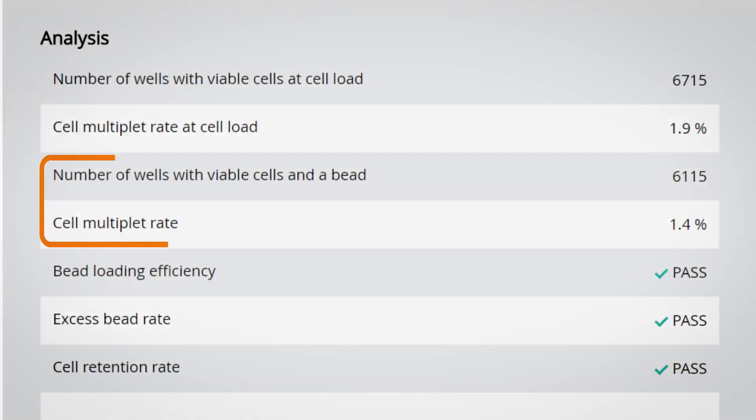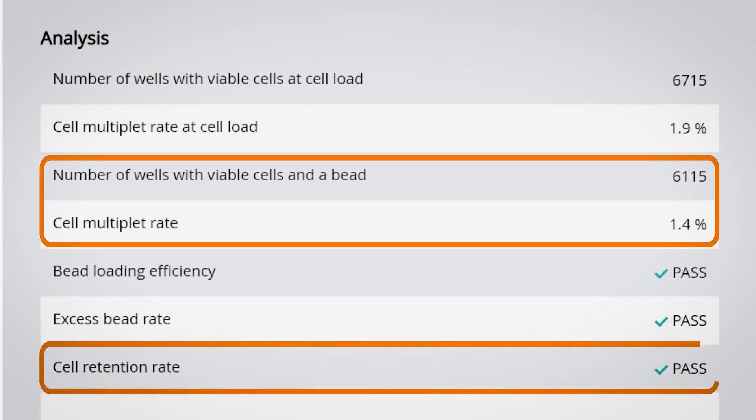In our experiment, we can see that after washing 6,115 cells were left in the cartridge with a multiplet rate of 1.4%. The cell retention rate has passed, so we are good to proceed to the next step.